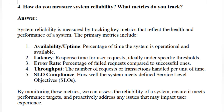Third is error rate — the percentage of failed requests compared to successful ones. Fourth is throughput — the number of requests or transactions handled per unit of time. Fifth is SLO compliance — how well the system meets defined Service Level Objectives. By monitoring these metrics, we can assess system reliability, ensure it meets performance targets, and proactively address issues that may impact user experience.